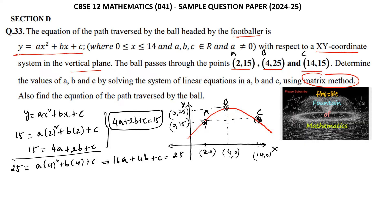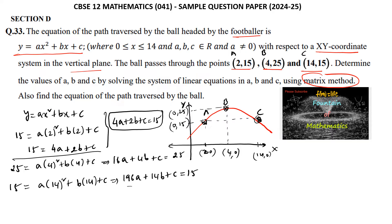For the third point, when x = 14 and y = 15, we get: 15 = 14² · a + 14b + c, which gives us 196a + 14b + c = 15. These are the three equations we need.